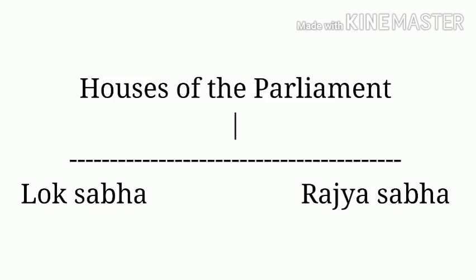One-third of the total members of Rajya Sabha who have completed their tenure of six years retire every two years and new members are elected. Anyone who wants to contest the election of Rajya Sabha should be at least 30 years of age and a citizen of India. The members of Lok Sabha and Rajya Sabha are known as Members of Parliament, that is, MPs.